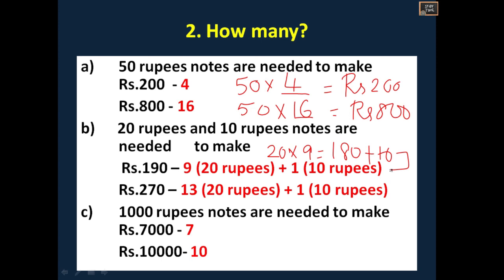Next, 270 rupees: 13 into 20 rupees gives 260 plus 10, that is 270. Similarly for 1000 rupees: how many 1000 rupee notes are needed to make 7000? That is easy — you need 7. And for 10,000 rupees you need 10 notes of 1000 rupees.